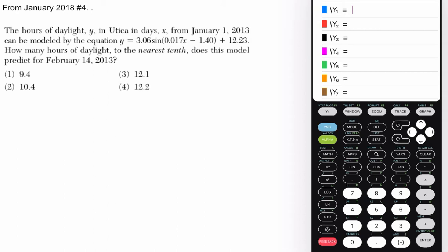Okay, so if we look at this problem, Y is the hours of daylight in Utica, and X is the number of days from January 1st. So in that context, I would say that if X equals 1, then we're looking at one day from January 1st. So that would be January 2nd, right? That's what I think this is saying.